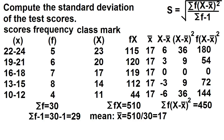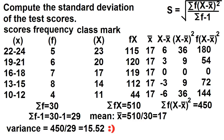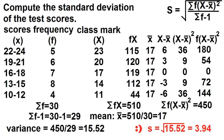Using the formula, the variance is just equal to 450 divided by 29, which is equal to 15.52. The standard deviation is just the square root of the variance. The square root of 15.52 is equal to 3.94. The standard deviation is 3.94.